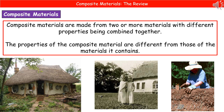Perhaps one of the best examples to use at this point is a material called Cobb. Cobb is actually made from clay, sand, straw and water, and it's used in several buildings in areas where bricks and cement may not be so easy to come across. When it dries, Cobb itself has similar properties to reinforced concrete that we use in a lot of our buildings in the UK.